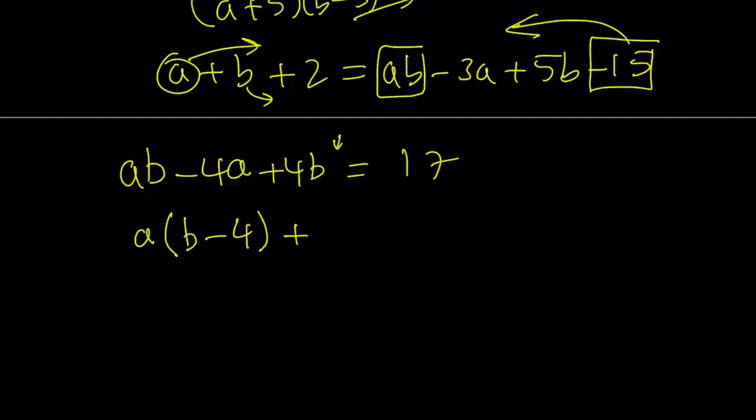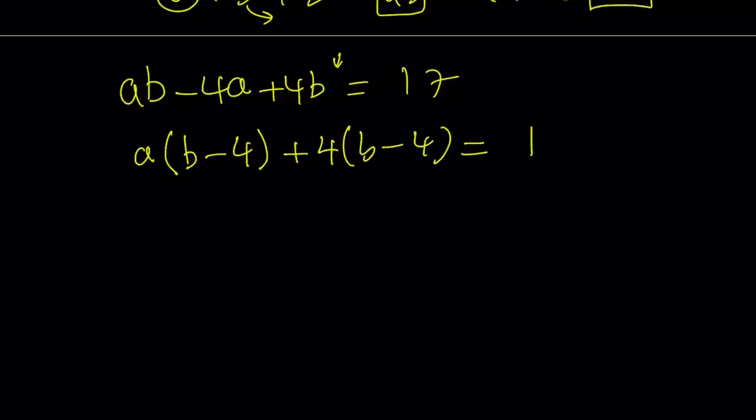And now I do want to have b minus 4 here, but I have to have a 4b, so I need to put a 4 here. That means I'm adding a negative 16 to both sides or subtracting 16, which gives me a 1 on the right-hand side. Fairly easy, right? You're just subtracting 16 from both sides, and then this becomes factorable by grouping, and then you just factor it by grouping.